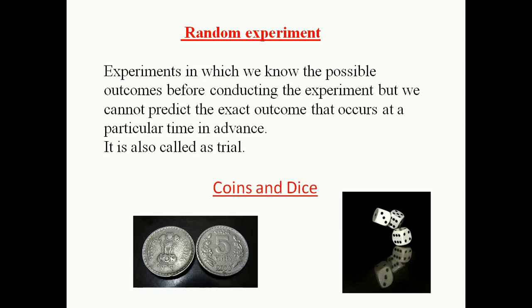Let us see in the case of dice. A dice has six sides. Before you roll a dice, as there are six sides, there is a possibility that any of the sides can be shown. We know what the outcomes are, but we can't say exactly what will come as our result. Such an experiment is called a random experiment, and it is also called a trial.